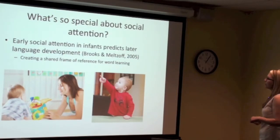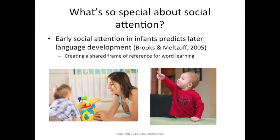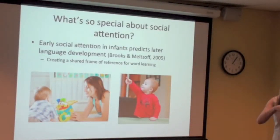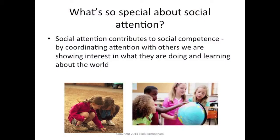What's the evidence? We know that early social attention in infants predicts later language development. The idea is that when we follow where somebody is looking, we create a shared frame of reference, which opens up opportunities for word learning. If mom is looking at an object and labels it 'juice box,' that's a learning opportunity for the child. Being interested in where someone is directing their attention is a huge opportunity for language development.